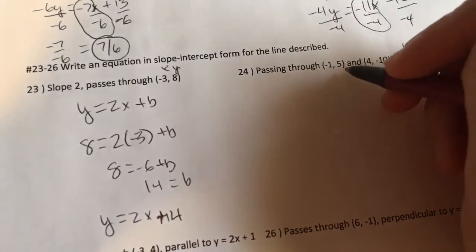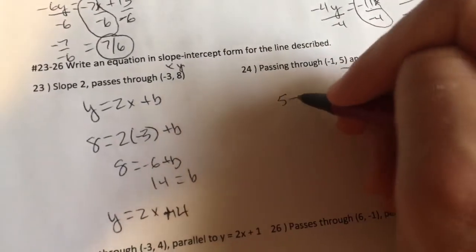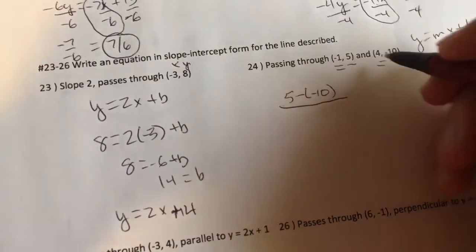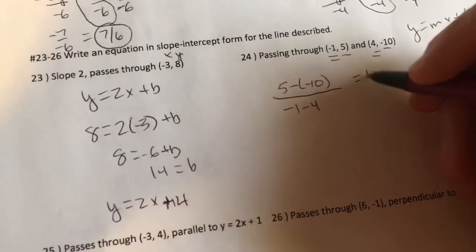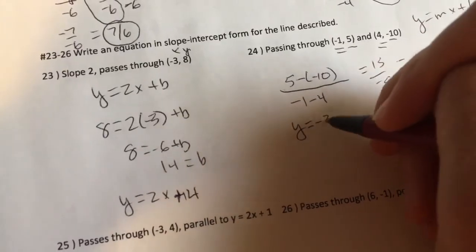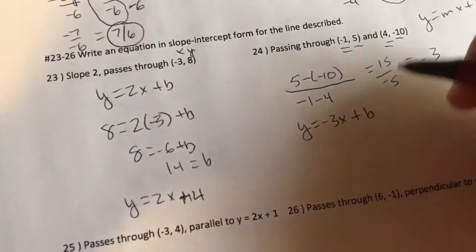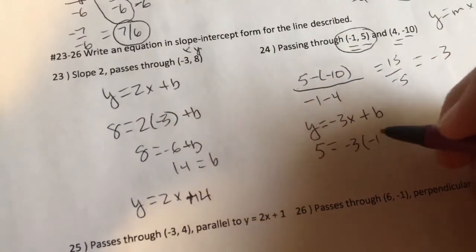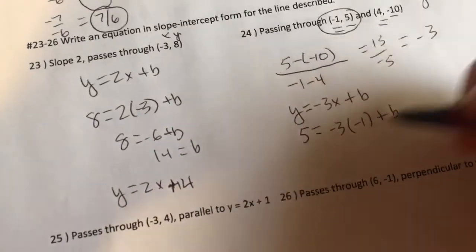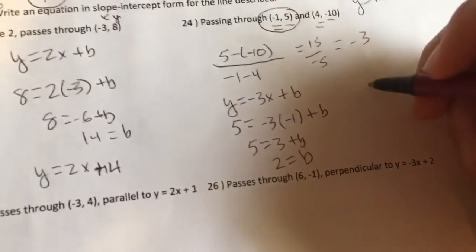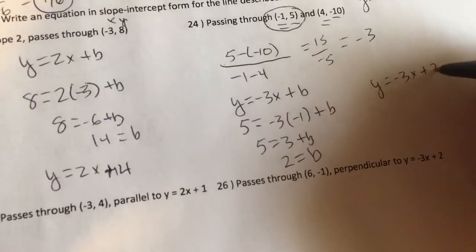All right, the next one. I've got to find the slope. So I'm going to do 5 minus a negative 10. 5 minus a negative 10 all over. I start with this ordered pair, so I must, again, negative 1 minus 4. I'm going to get 15 over negative 5, which is negative 3. So Y equals negative 3X plus B. Pick an ordered pair to use. I might use that one. Y is 5. Y is 5, and that's equal to negative 3 times negative 1 plus B. 5 is equal to 3 plus B. Again, I go about solving for my Y-intercept. I get 2 for my Y-intercept. So Y equals negative 3X plus 2 is my equation.